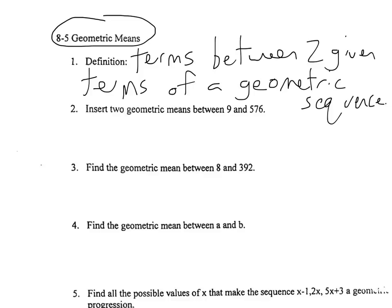The problems we're going to do here are very similar, but there are little twists between all of them, which is why there are about six examples. Number two says: insert two geometric means between 9 and 576. That means there's a geometric sequence with four terms, because it says there are two between 9 and 576. We need to find the common ratio and multiply it to 9 twice — those are the numbers in between 9 and 576. We're going to use the geometric sequence formula.